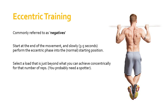What you'll need to do is select a load that is just beyond what you can achieve concentrically for that number of reps. So if you've got a particular load that you can bench for five reps and that's roughly your limit, you can nudge up above that slightly as long as you're only using the eccentric phase of the contraction. Obviously, there's a certain amount of risk here, and that's why you're probably going to need a spotter for eccentric training — at least for loaded exercises, not just bodyweight. If we're loading bars, I very strongly recommend having a spotter.